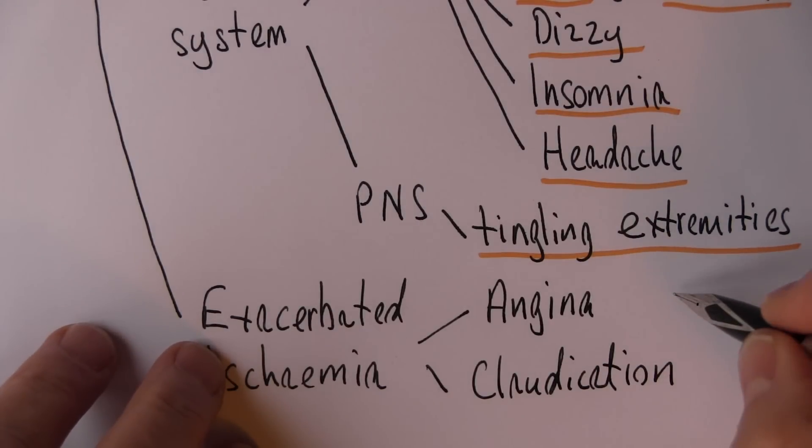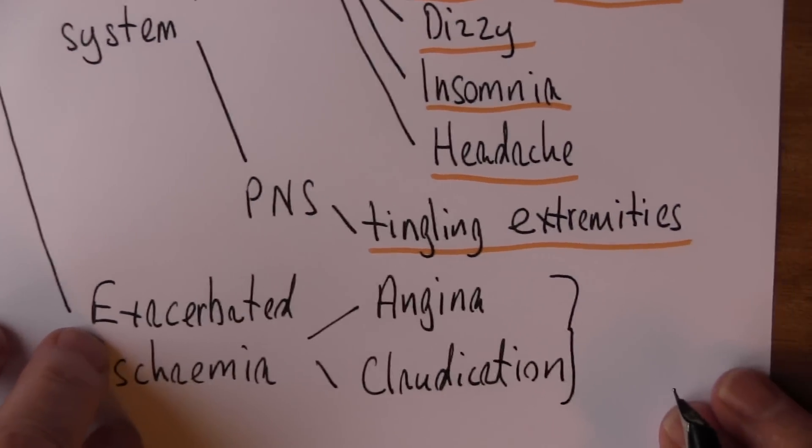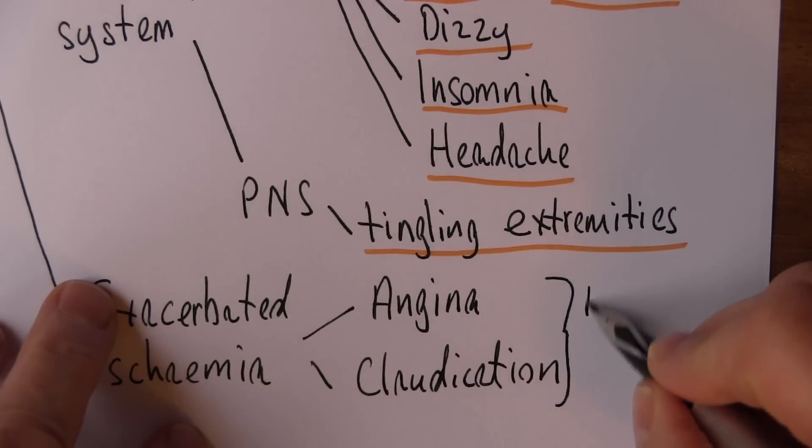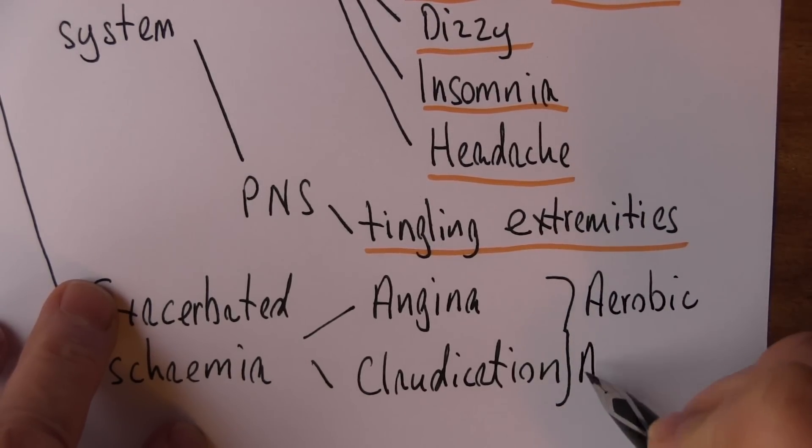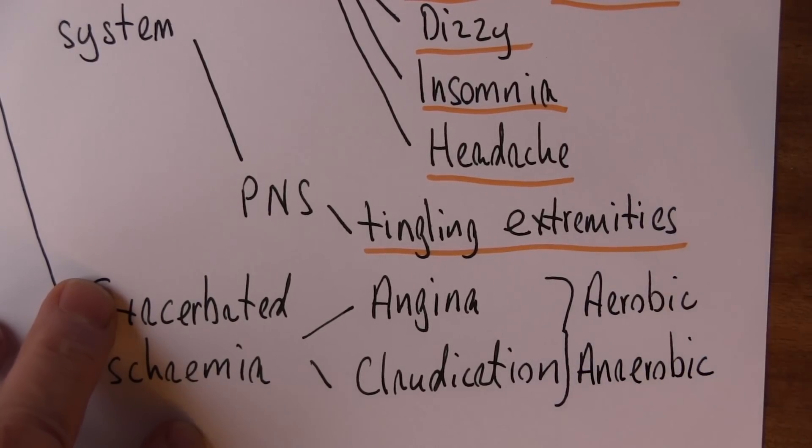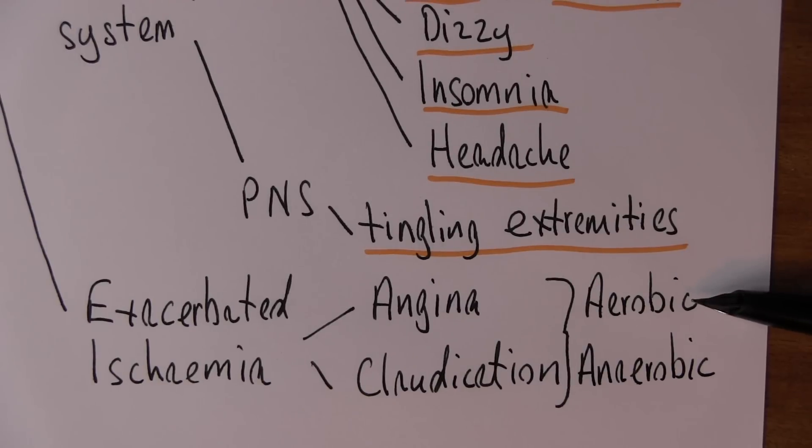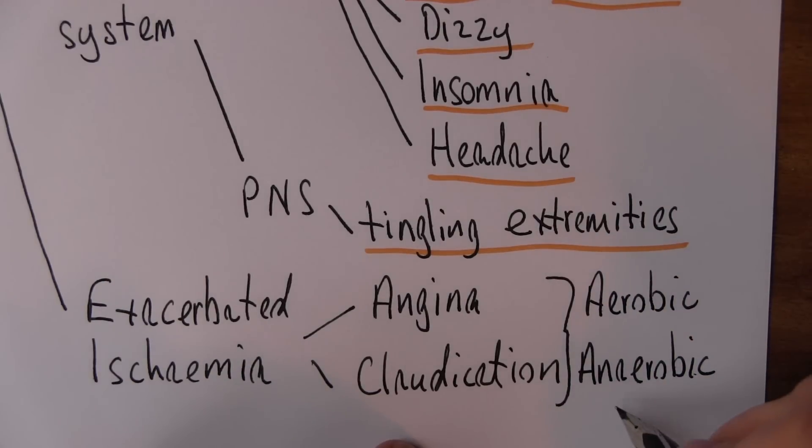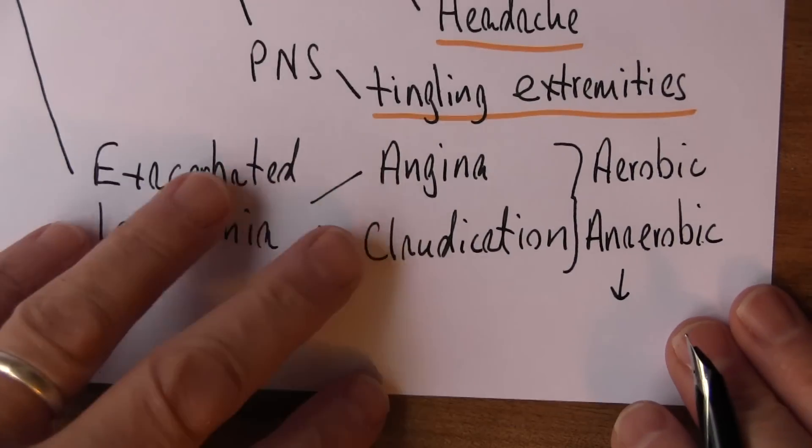It's the same with claudication which I'll explain in a minute. Basically the metabolism in these ischemic hypoxic tissues changes from aerobic to anaerobic. Aerobic means there is metabolism in the presence of oxygen. Anaerobic means that there's metabolism in the absence of oxygen. And if there's anaerobic metabolism, that leads to the production of lactic acid.